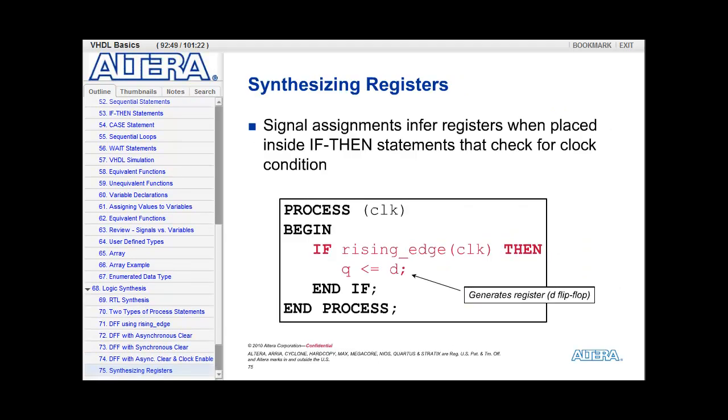So the thing to remember is that signal assignments will automatically infer registers when you place them inside an if-then statement that checks for the clock condition. So looking at the example here shown in red, as you can see, there's an if rising edge clock statement, and then nested underneath is the signal assignment, Q gets the value of D.